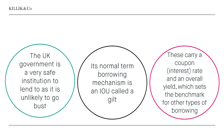The normal borrowing mechanism is called a gilt — it's an IOU issued by the government. Investors buy these things, expect some sort of return in a normal market, and then the government buys them back at a fixed maturity or redemption date. These typically carry a positive coupon interest rate and also an overall yield, which sets the benchmark for other types of borrowing. People look at a typical 10-year government gilt and say, well, there is the risk-free rate — the government is unlikely to go bust, so the rate at which we lend to it is likely to be among the lowest in the market.